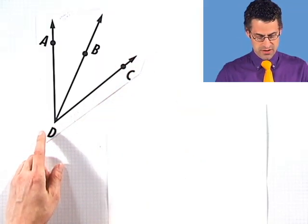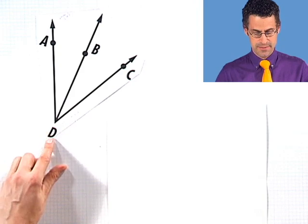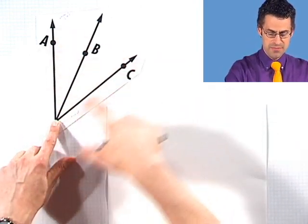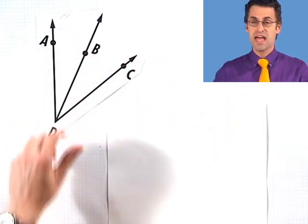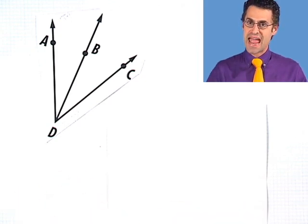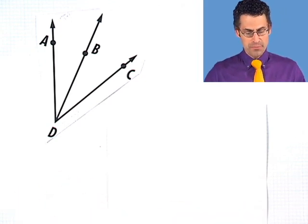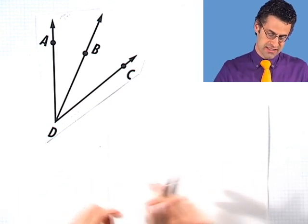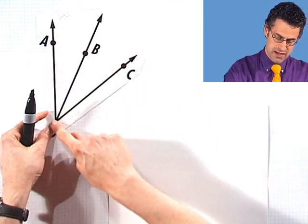So here are a bunch of rays that you notice all have a common endpoint, D, and they shoot off, and in between them we see various angles. I want us to name three angles from this picture. Well, it's sort of easy to do because I can see three angles. For example, one angle will be this angle right here.